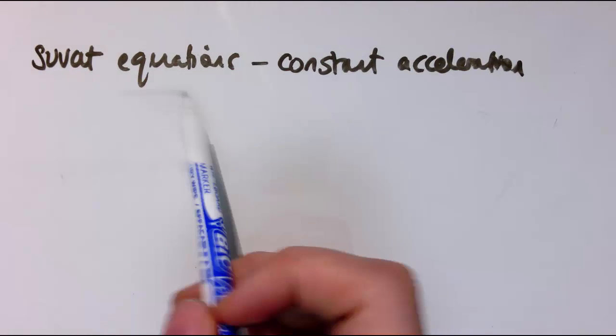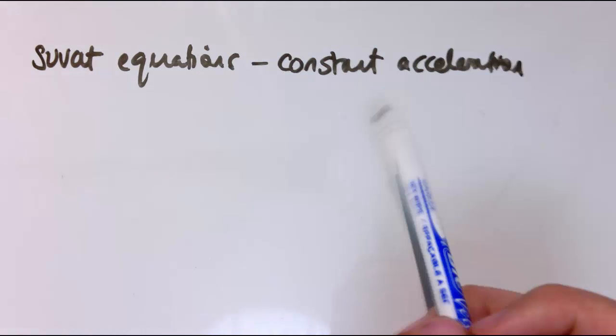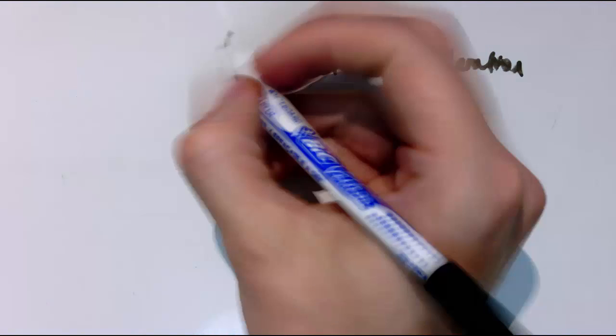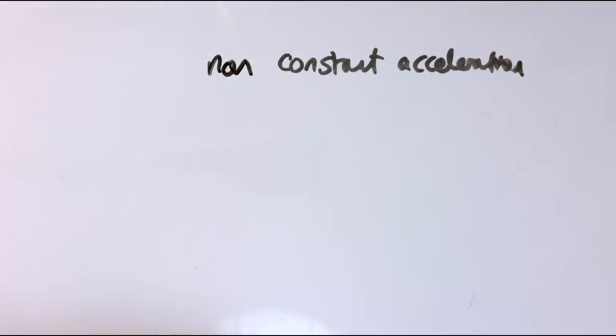So in previous videos I've looked at the SUVAT equations, which look at situations where we've got a particle accelerating at a constant acceleration. And we want to now extend to situations where we can't use the SUVAT equations, where I've got a non-constant acceleration, so maybe the acceleration changes over time.